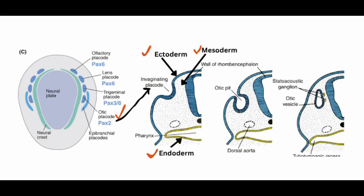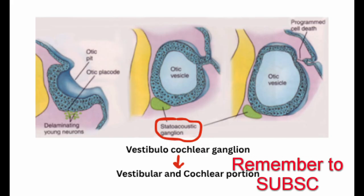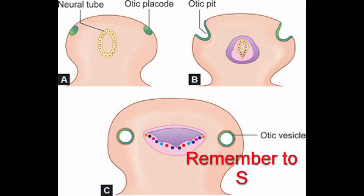Ultimately, the otic vesicle will differentiate to form all the components of the membranous labyrinth and the internal ear structures associated with hearing and balance. The vestibulocochlear ganglion is formed at this stage and later splits into vestibular and cochlear portions. To summarize: from otic placode, to otic pit, and later to otic vesicle.